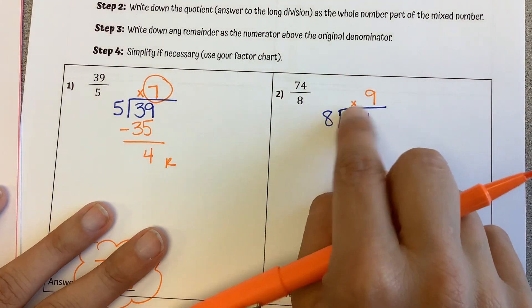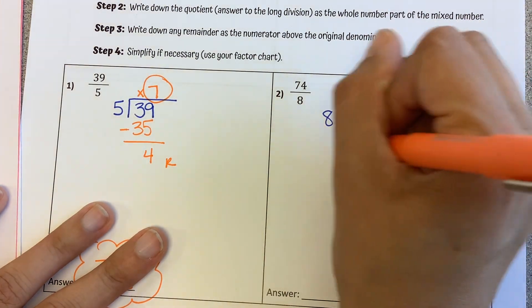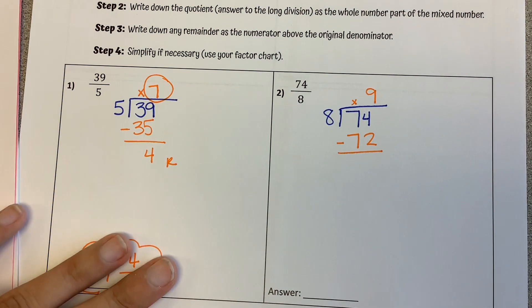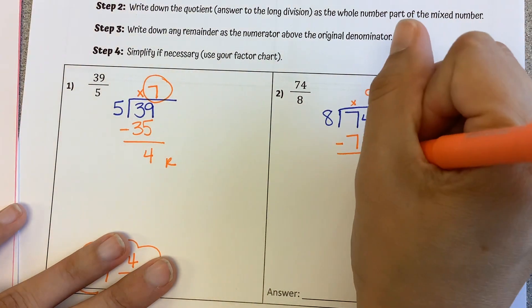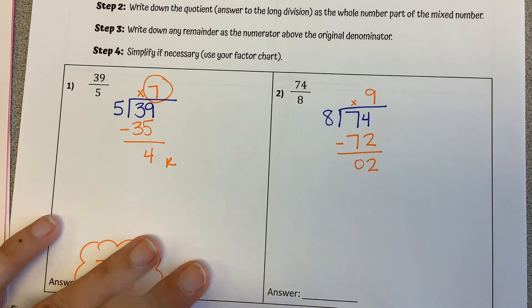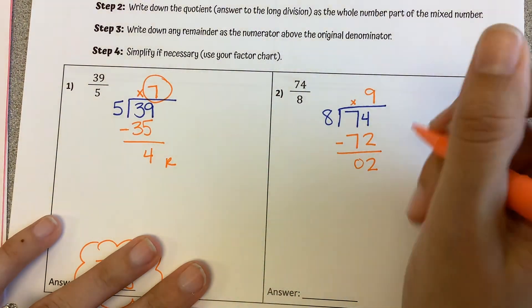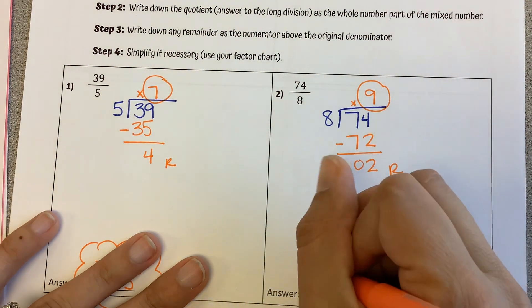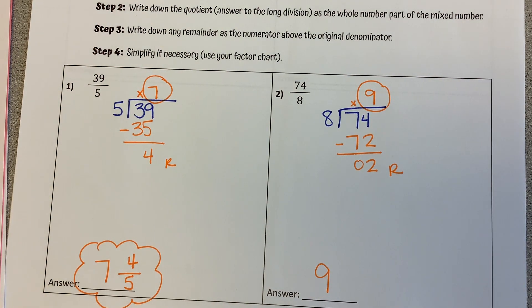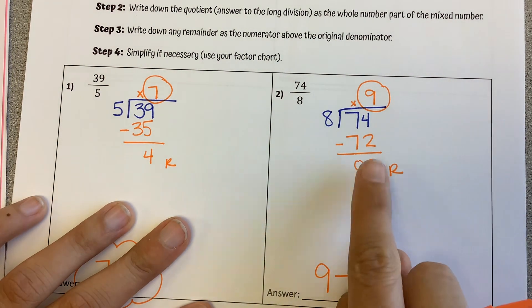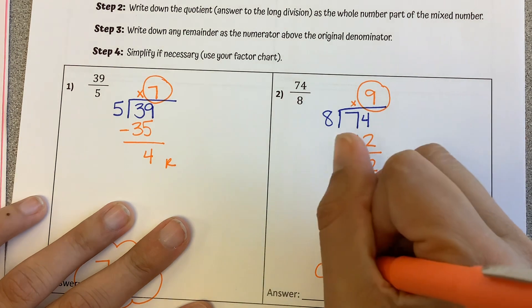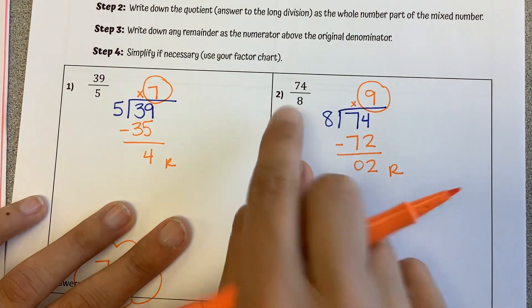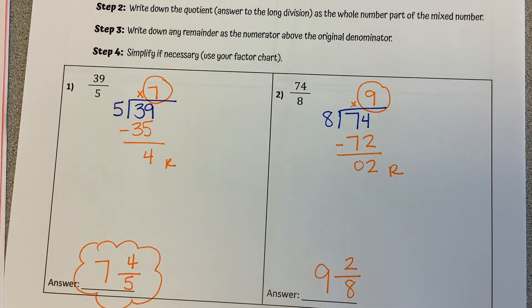And as we just saw, 8 times 9 is 72. And then we're going to subtract. 4 minus 2 is 2. 7 minus 7 is 0. We have nothing else left to bring down. So this is our remainder. The whole number amount of times it goes in is the whole number in our answer. And then for our fraction, the remainder goes on top of our fraction in the numerator. That original denominator of 8 goes on the bottom.